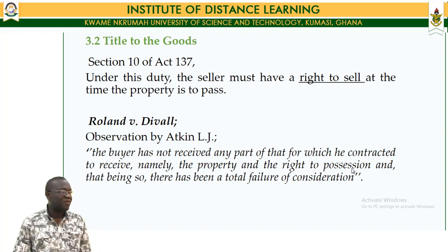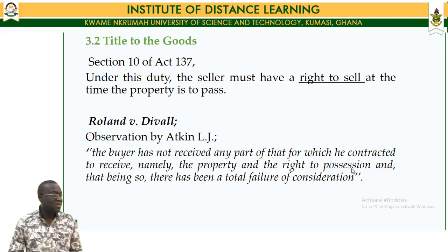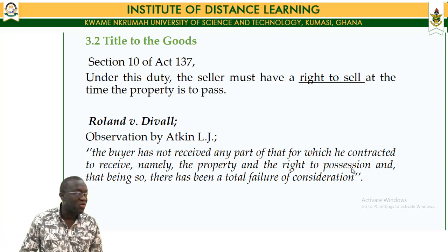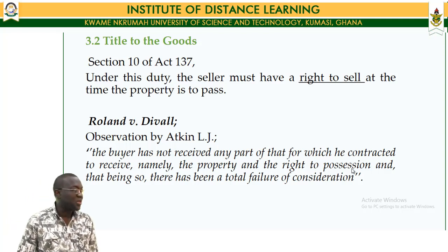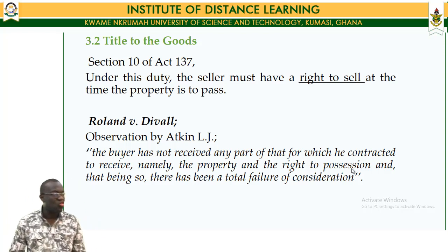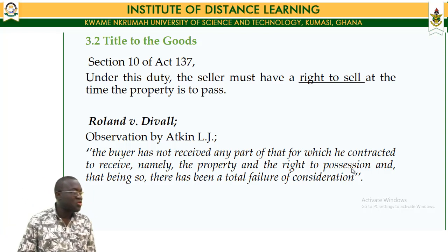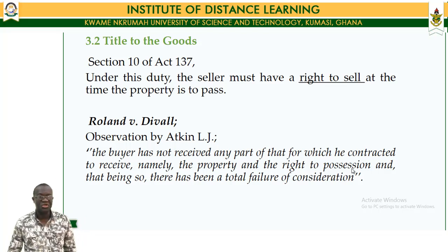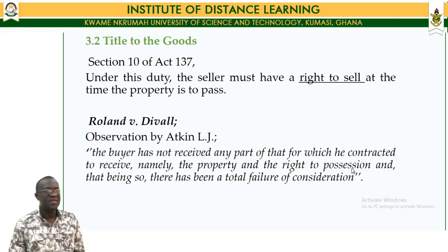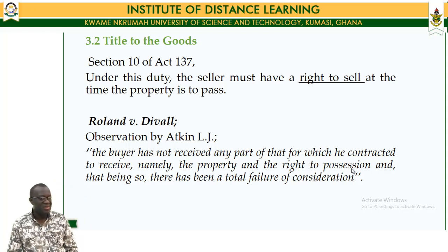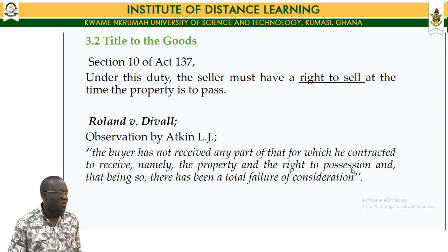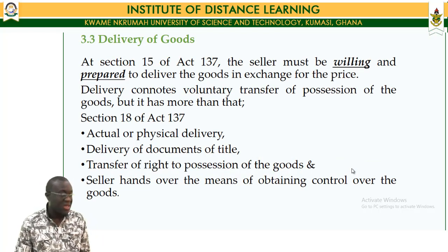In the case of Roland versus Deva, the observation of Atkin is that the buyer has not received any part of that property or goods for which he contracted to receive — namely the property and the right to possession. And that being so, there has been a total failure of consideration. In that case, there has not been a right of possession, or in the agreement it is agreed that there will be a transfer of the property before the right can be transferred to the other party.